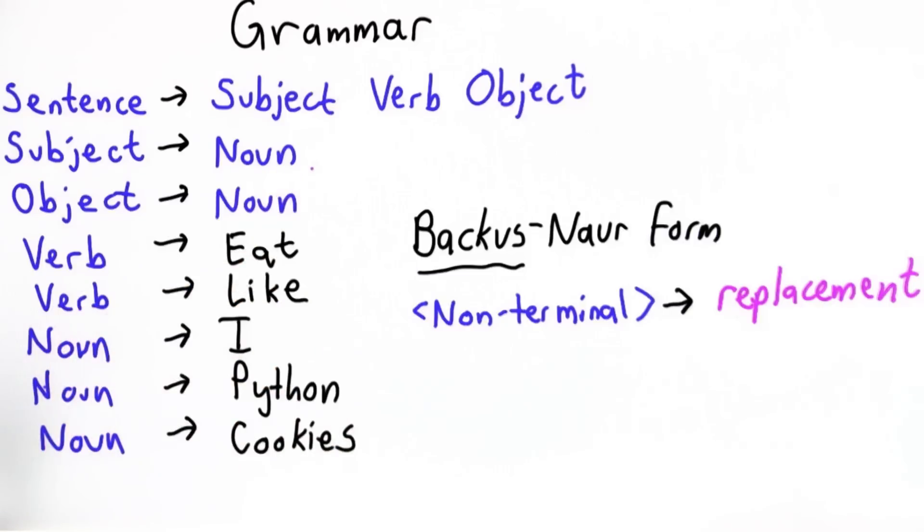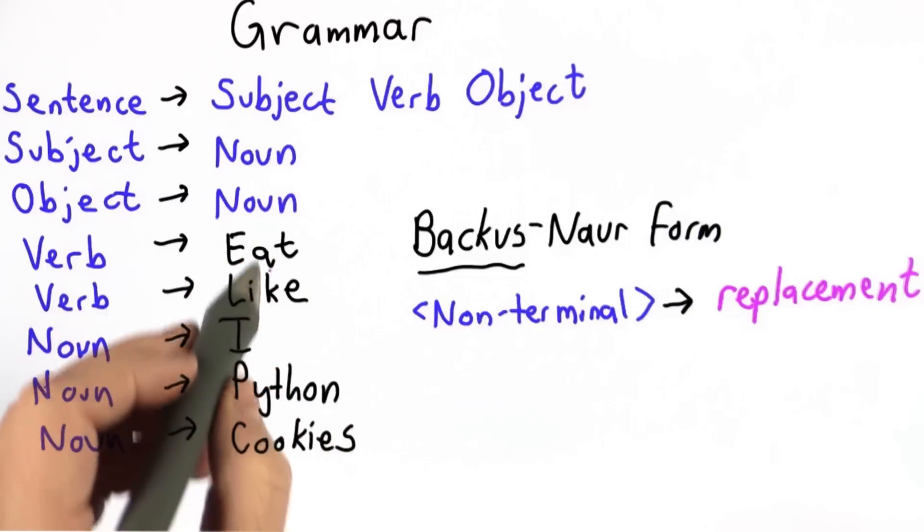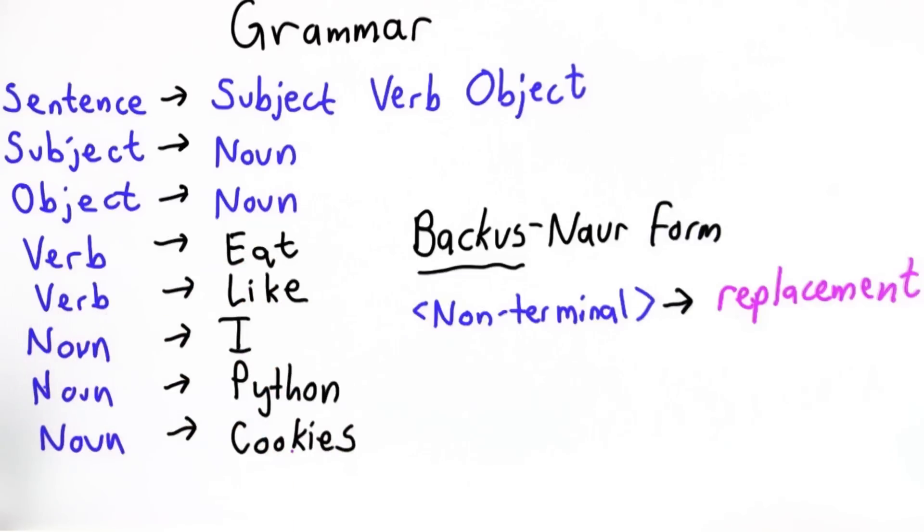It can be one non-terminal, like here. It can also be a terminal, and the terminals I've written in black. What's special about the terminals is they never appear on the left side of a rule. Once we get to a terminal, we're done, we're finished. There's nothing else we can replace it with. So all the rules have this form.